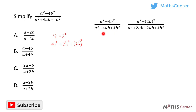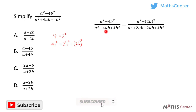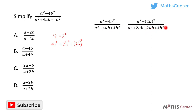Those two numbers are 2 and 2. After getting them, we replace 4ab with 2ab plus 2ab. So the expression becomes a squared plus 2ab plus 2ab plus 4b squared.